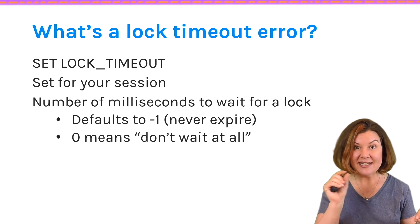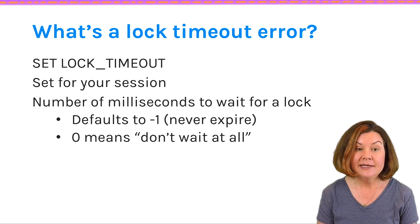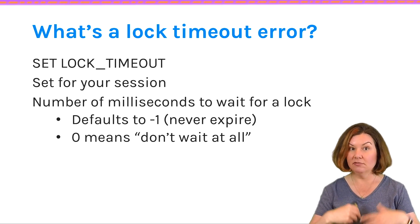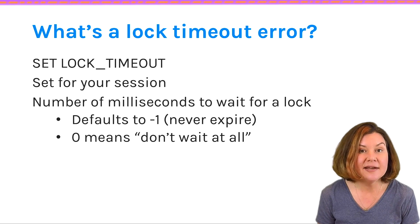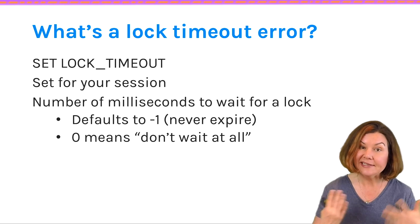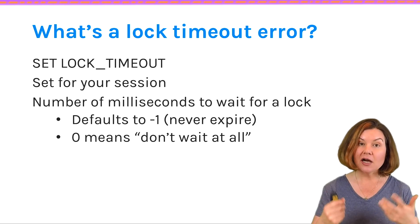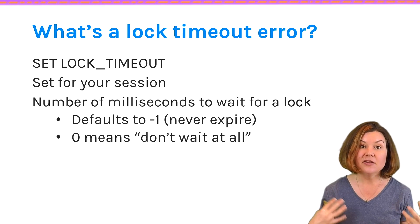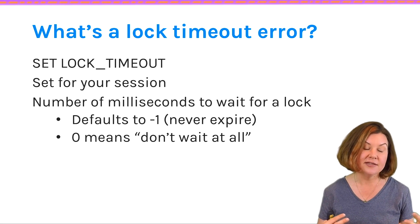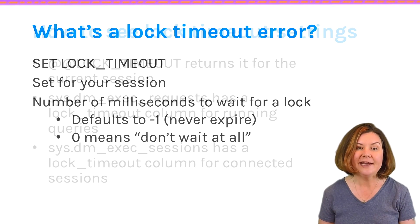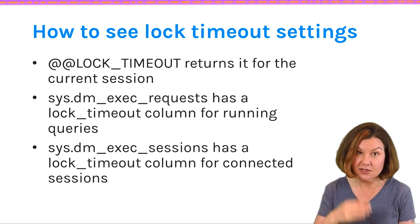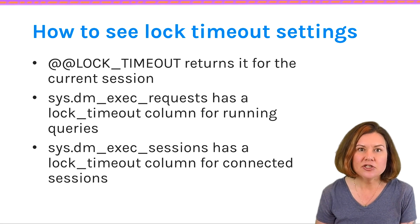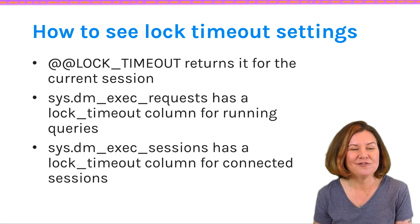If you run a command to set lock timeout, you can set it to a specific value. If you set it to zero, it means don't wait at all — if I get blocked, just bail out and timeout. You could also set it to, say, a thousand milliseconds. It's in milliseconds and you can set it to whatever value you want. So if we're getting lock timeout errors, that implies these sessions have set their lock timeout to something other than the default, because if it were the default, they would keep waiting patiently.